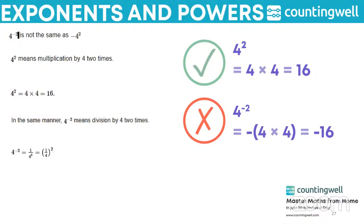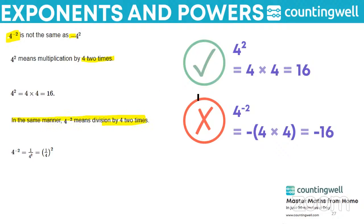Also, 4 to the power minus 2 is not the same as minus 4 squared. To evaluate 4 to the power minus 2, write it with a positive exponent by taking the reciprocal of the base 4: 4⁻² = 1 upon 4² = 1 upon 16. But minus 4² means take 4 squared and then make it negative, giving minus 16. In the same manner, 4 squared means multiplication by 4 two times, whereas 4 raised to minus 2 means division by 4 two times.